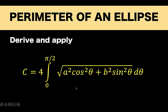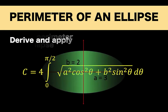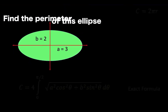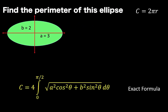Here's the formula: C equals 4 times the definite integral from 0 to pi over 2 of the square root of a squared times cosine squared theta plus b squared times sine squared theta, d theta. In this lesson, we are going to do two things. First, we are going to derive the formula. And second, we are going to look at other formulas that can approximate the perimeter of an ellipse.